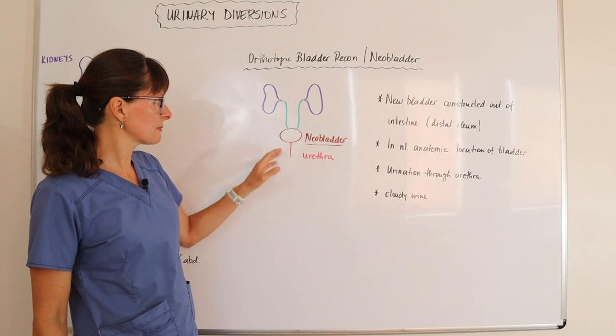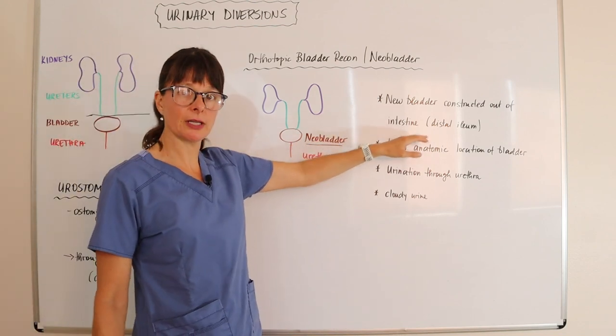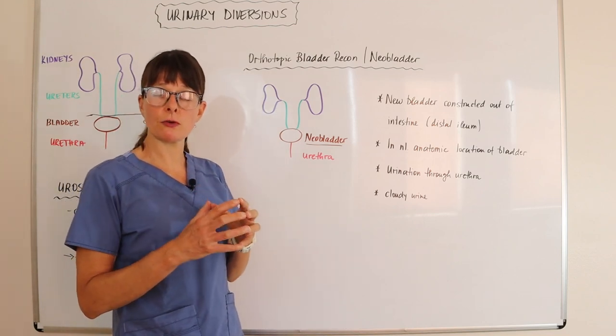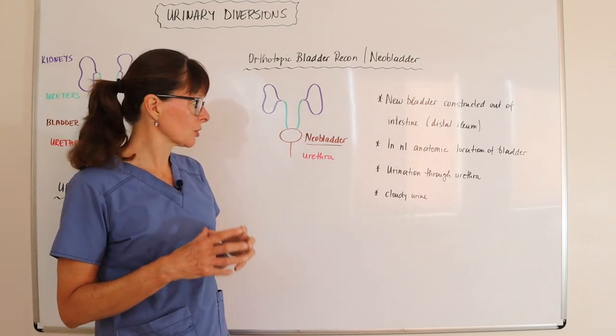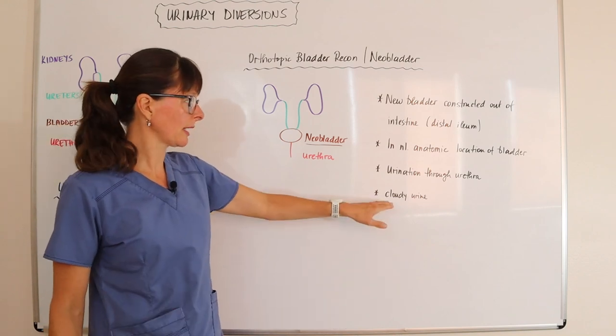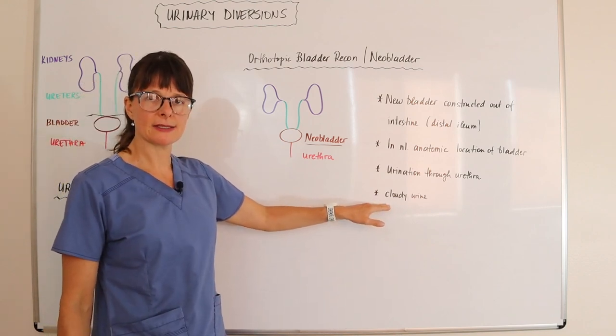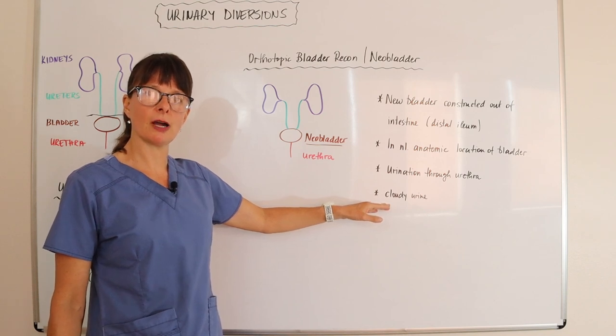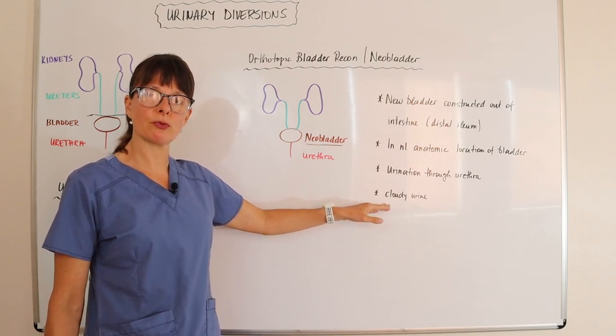Many times because the neobladder consists of the distal ileum, the inside mucosa is very different from the original bladder. So the urine many times will look kind of cloudy as it is eliminated from the body. And that certainly is an important education point for the patient.